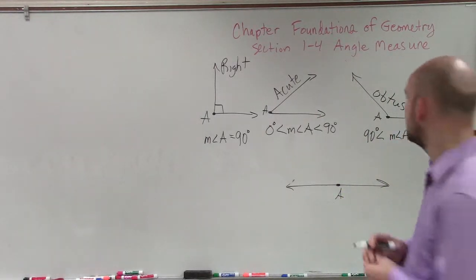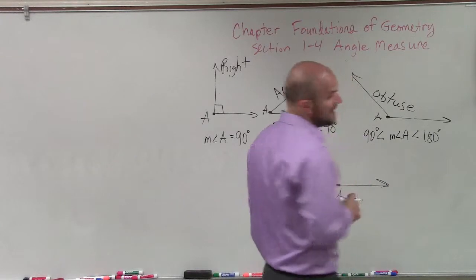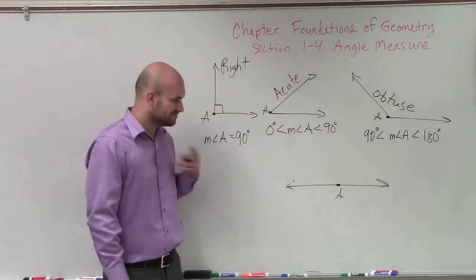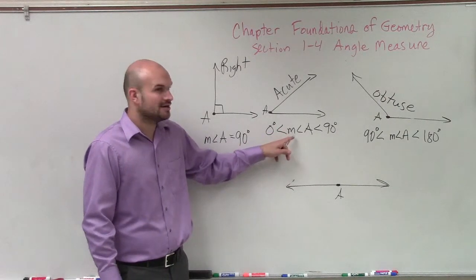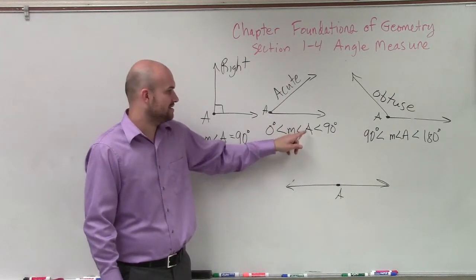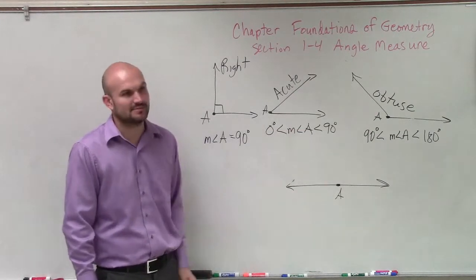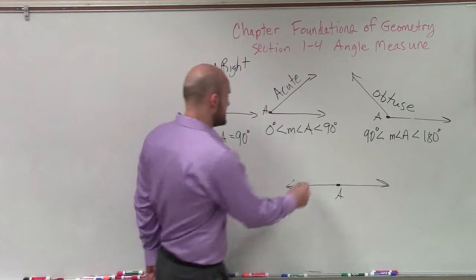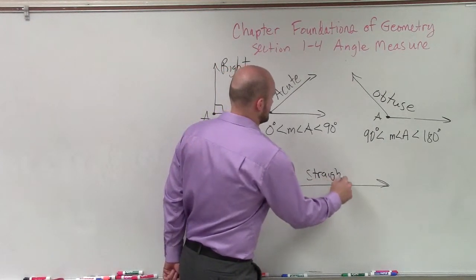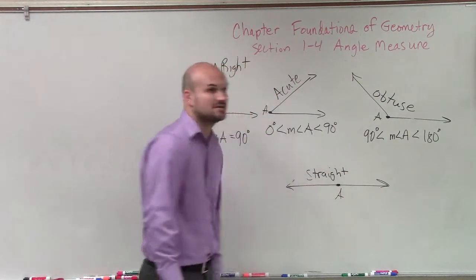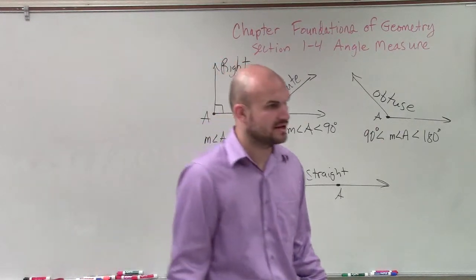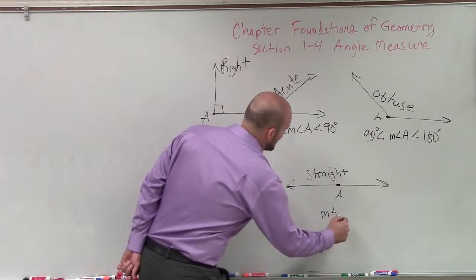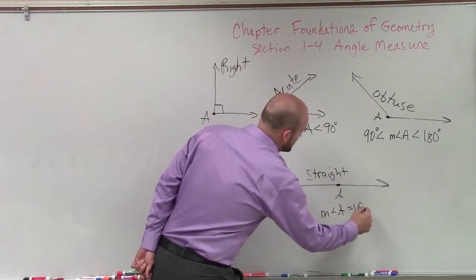That means the measure of angle A. When I say M angle A out loud, it means measure of angle A. So it's not another less-than symbol — it's actually an angle symbol for angle A. And the last one we have is a straight angle. A straight angle is actually going to be two opposite rays. Two opposite rays create a straight angle, and the measure of angle A is equal to 180 degrees.